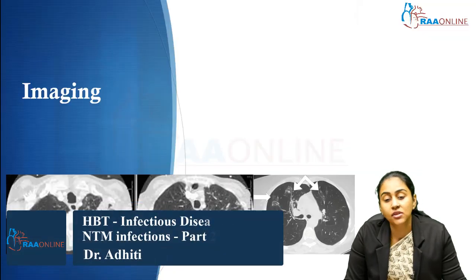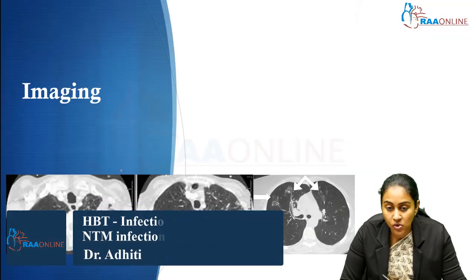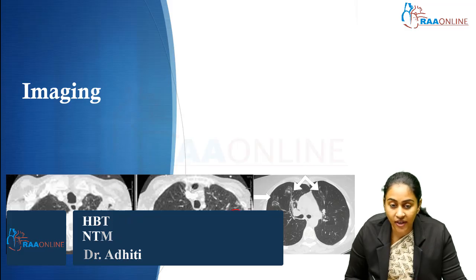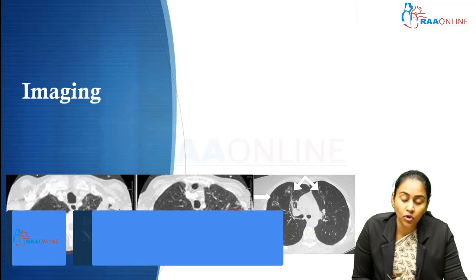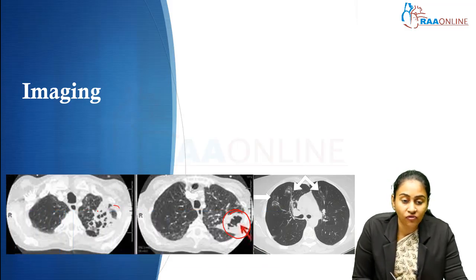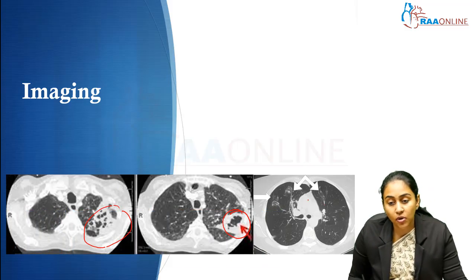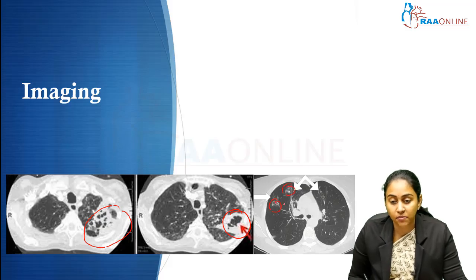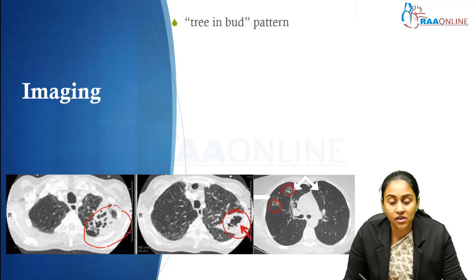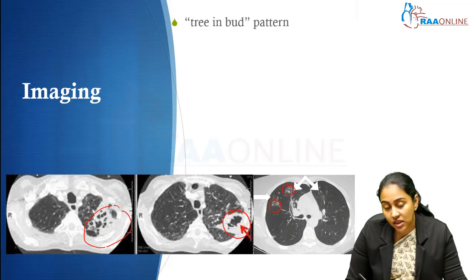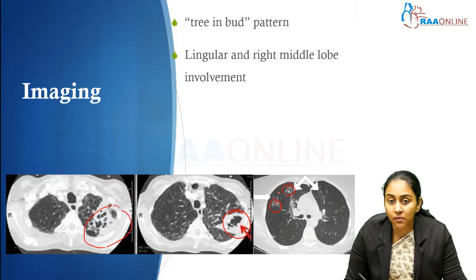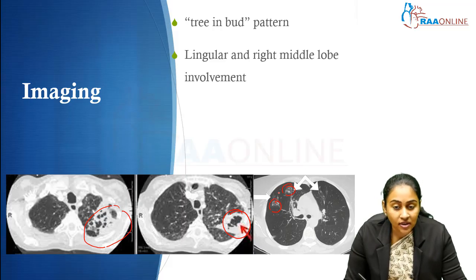Coming to imaging, these are all the different things that you will be able to see. Either you may be able to find the cavity, or you may be able to find these areas of nodular bronchiectasis or tree-in-bud appearance. These are the three patterns which are generally seen in chest imaging: tree-in-bud pattern, nodular bronchiectasis, and cavitary formation.